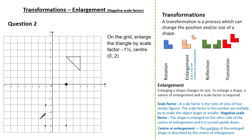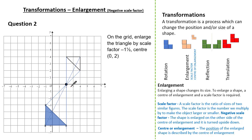Drawing the triangle, you can see it is inverted and on the opposite side of our centre of enlargement. Checking with ray lines: connecting corresponding vertices, each ray line passes through the centre of enlargement. This verifies we have correctly drawn an enlarged shape by a scale factor of minus one and a half.